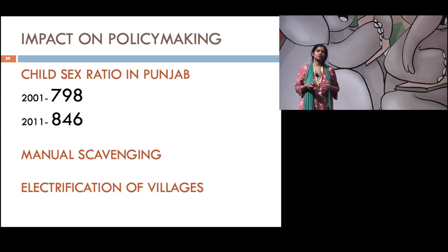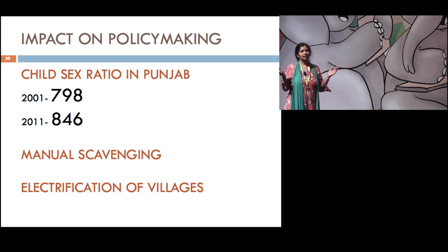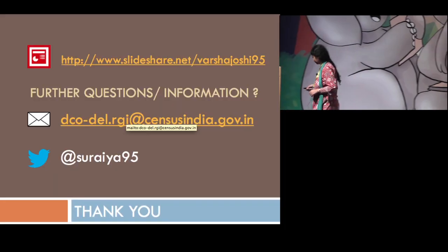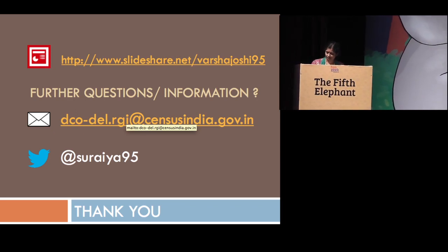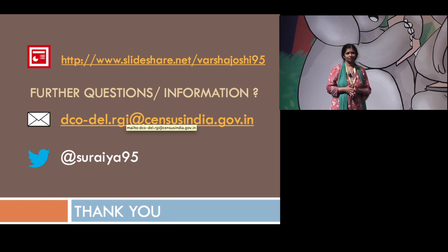And one more example I'd like to talk about is the electrification of villages. In the 91 census, a lot of villages were shown as electrified. When the data was seen, only one house in those villages was electrified. Then it was decided that if only one house has electricity, then how can the village be considered electrified? And the definition of electrification was changed to ensure that at least 10 houses are going to have electricity only then the village is considered electrified. So this is how census data helps at a very large scale and it also can help in a very small scale to take decisions.